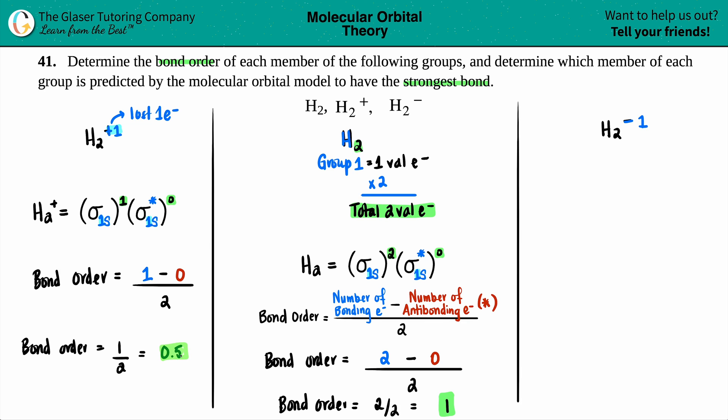No units for bond order, by the way, they're just numbers. Okay. So I have a one, a 0.5. And now let's see what this one is.